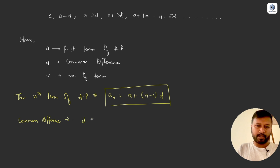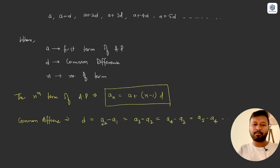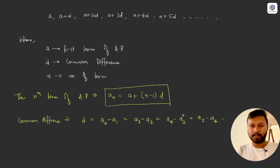The common difference d is calculated as: d = a₂ − a₁ = a₃ − a₂ = a₄ − a₃, and so on. You simply subtract any term from the next successive term. For example, subtracting the first term from the second gives a₂ − a₁, subtracting the second from the third gives a₃ − a₂, and so forth.